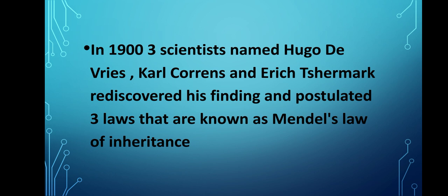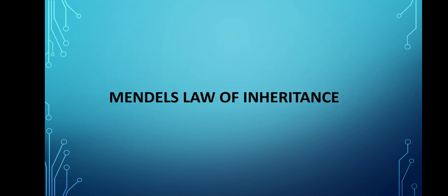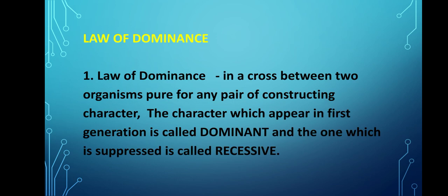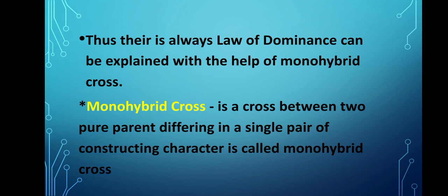Now let's see Mendel's Law of Inheritance. Number one is the Law of Dominance. A cross between two organisms pure for any pair of contrasting characters — the character which appears in the first generation is called dominant, and the one which is suppressed is called recessive. A cross between a homozygous dominant and a homozygous recessive will always express the dominant phenotype. Thus, the Law of Dominance can be explained with the help of a monohybrid cross.